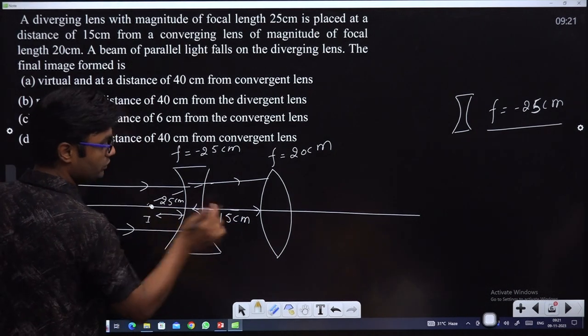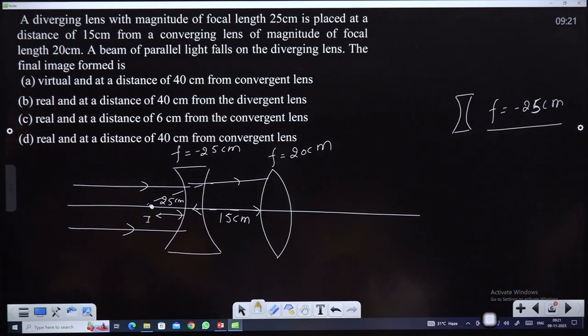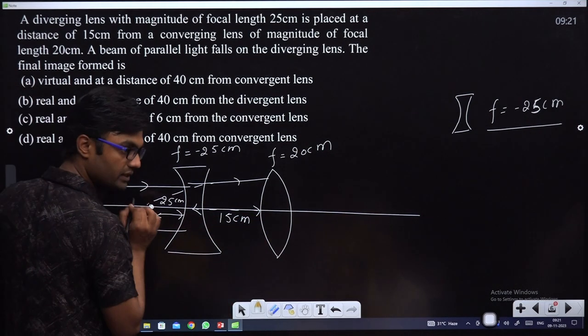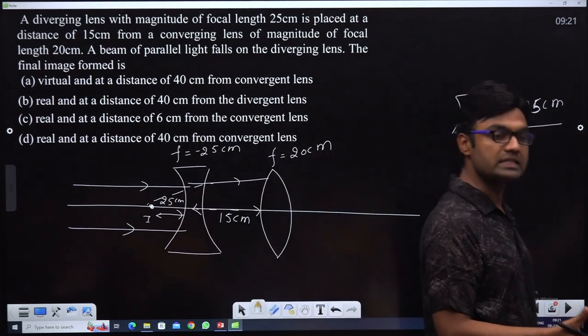15 plus 25 equals 40cm. So this is the real object for the converging lens at a distance of 40cm.